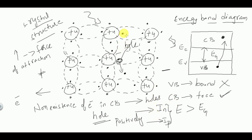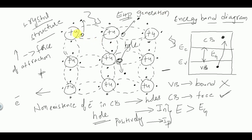The number of holes formed is equal to the number of free electrons generated. This process where new free electrons and holes are generated is called EHP — electron-hole pair generation. So this process is called EHP generation.